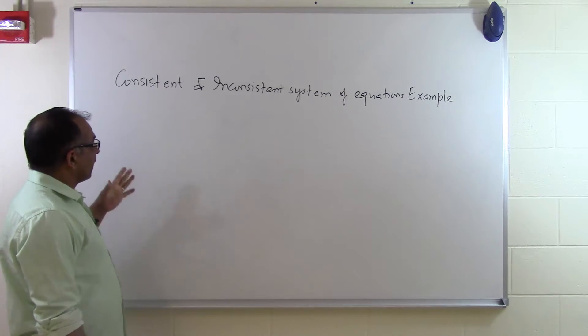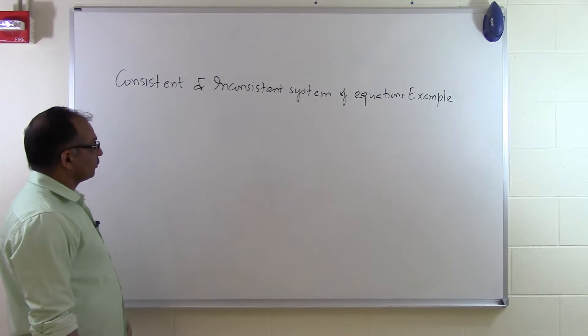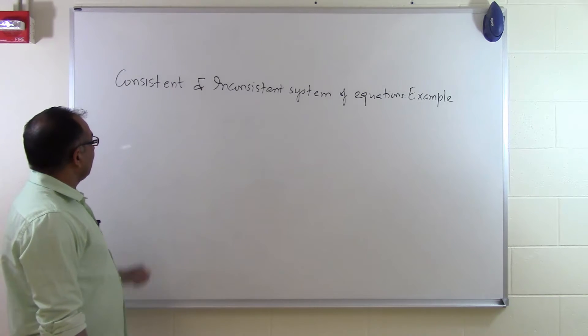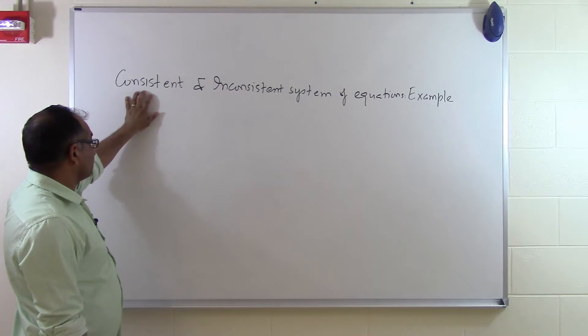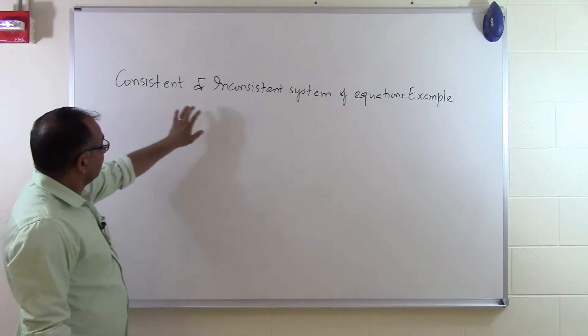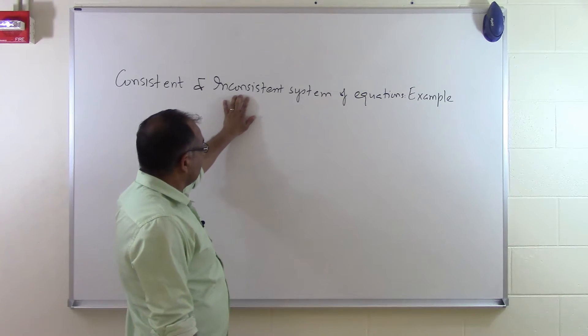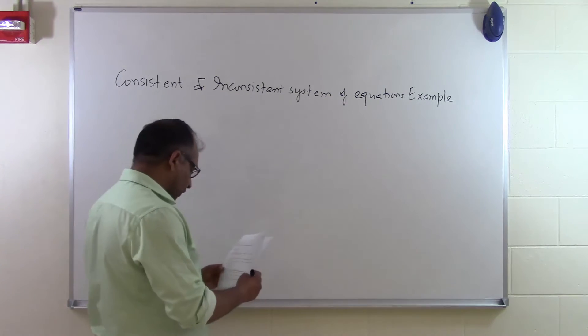In this segment we will look at some examples of inconsistent and consistent system equations. We know that a particular system of equations can be consistent if it has a solution, and that solution can be either unique or infinite. We are considering system equations to be inconsistent if it has no solution at all.